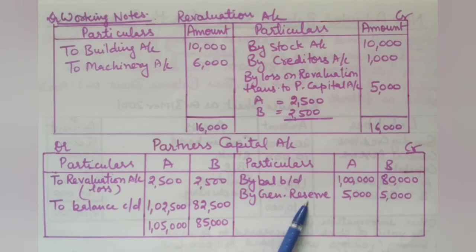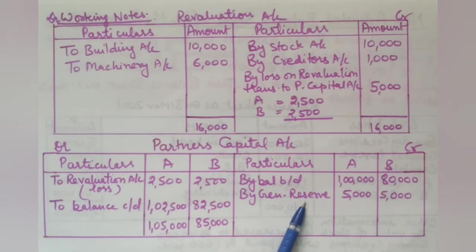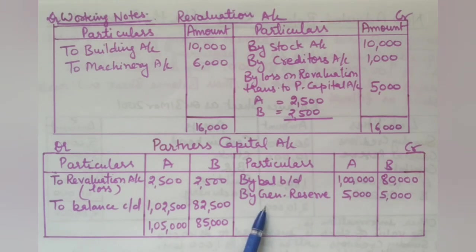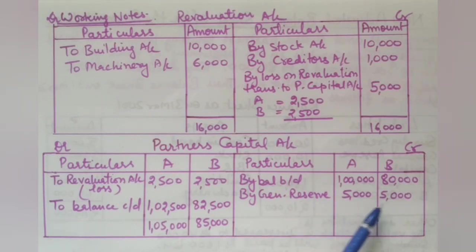Since there is no specific instruction to retain the reserves, we distribute the general reserve to partners. The general reserve of 10,000 rupees is distributed equally — 5,000 each to A and B — and credited to their capital accounts. This clears the reserve from the balance sheet.